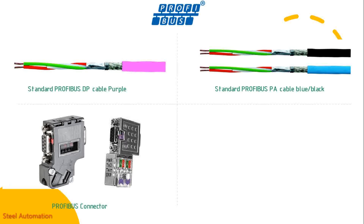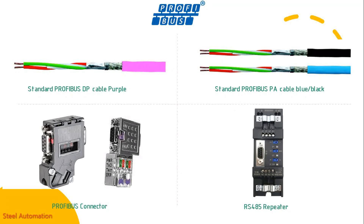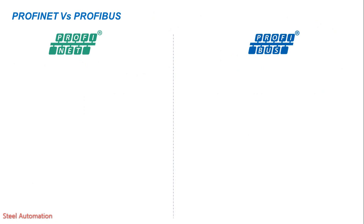A Profibus connector is used to terminate the cable. The RS-485 repeater connects two Profibus bus segments in RS-485 technology with up to 32 devices. It provides transmission rates from 9.6 kbps to 12 Mbps. It is used when more than 32 stations are connected to the bus or the maximum cable length of a segment is exceeded. These components will be discussed in detail in other videos.